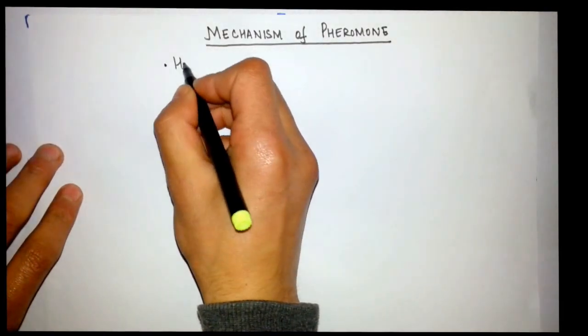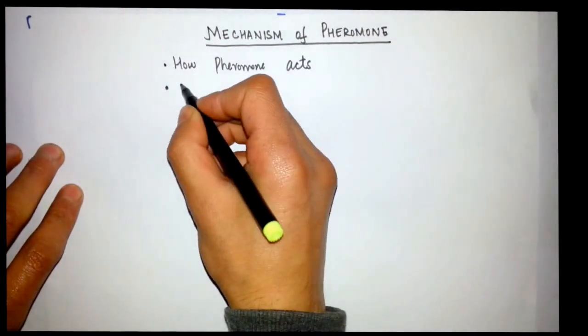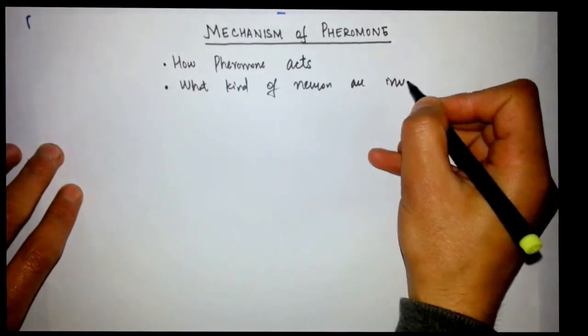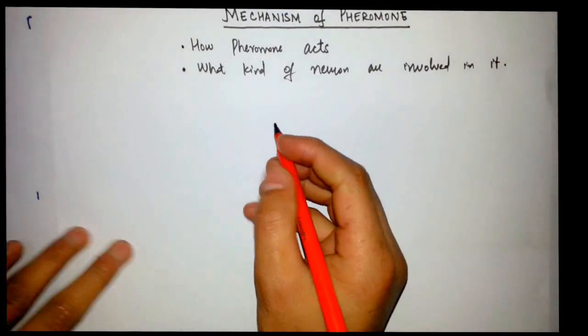In this mechanism of pheromones, we will be discussing how pheromones act, what kind of neurons are involved, and when a pheromone is generated by any animal, how other animals receive it. I will draw a chart here to describe what pheromones are and how they are able to act.